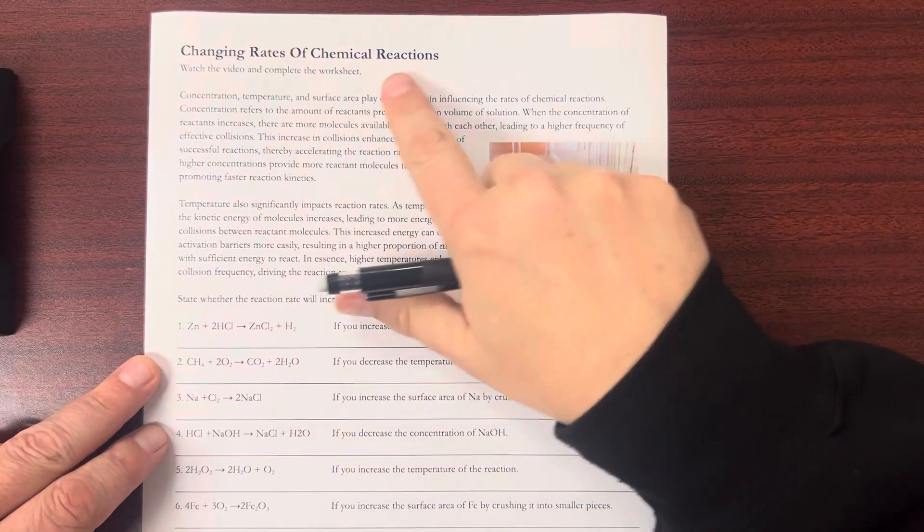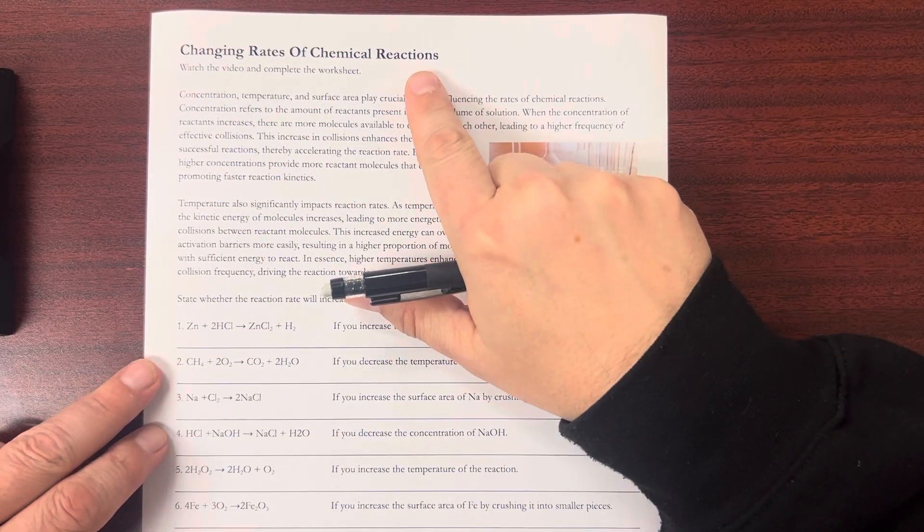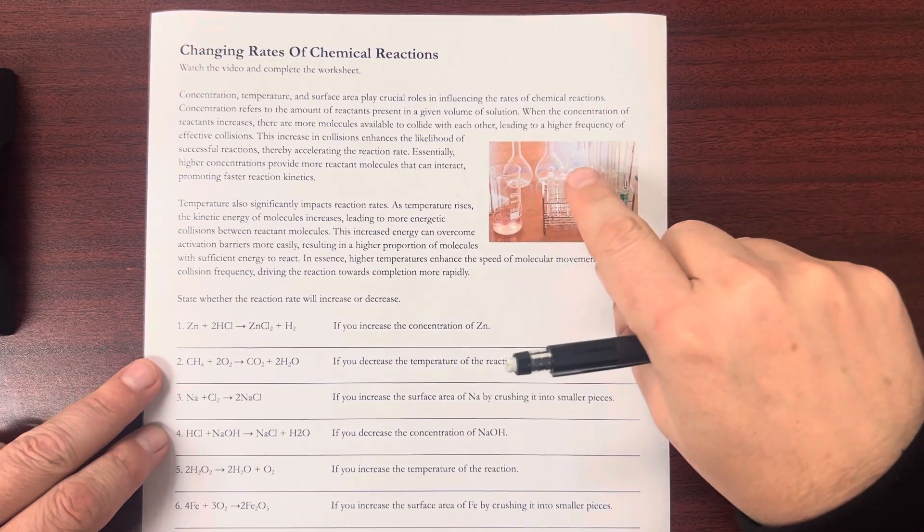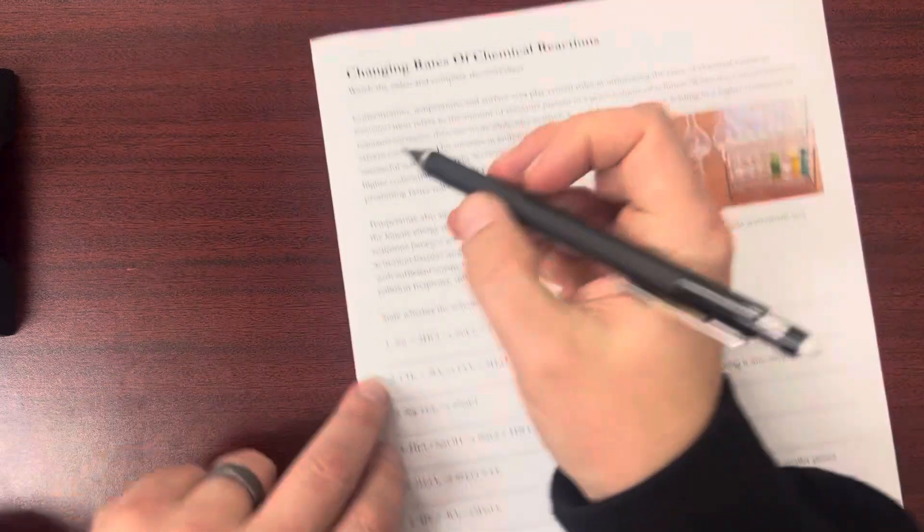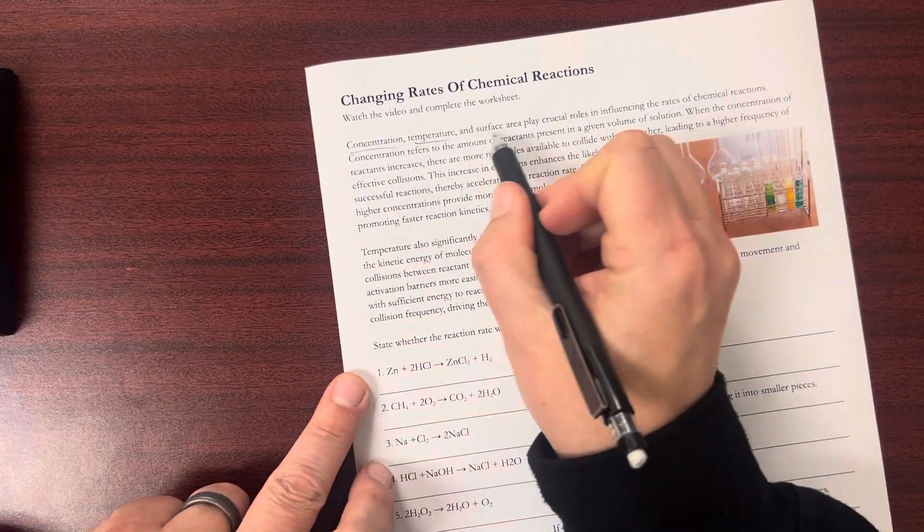Hello. Today I'm going over changing rates of chemical reactions, and we're looking at three things here. We're looking at concentration, temperature, and surface area. So one, two, three.